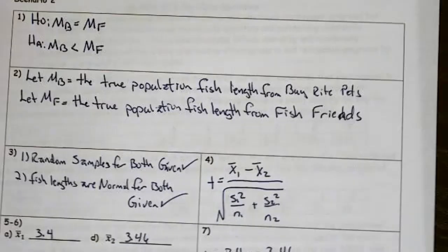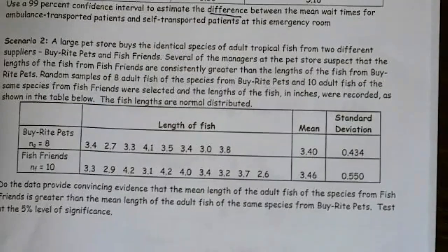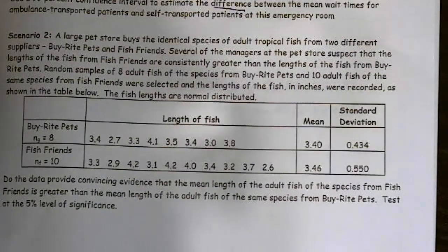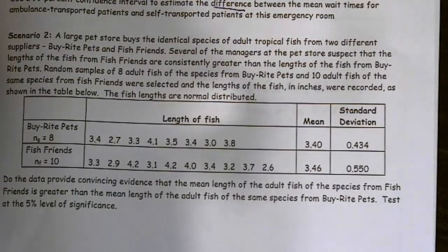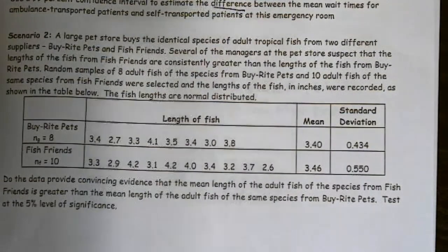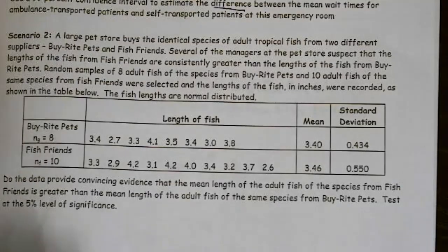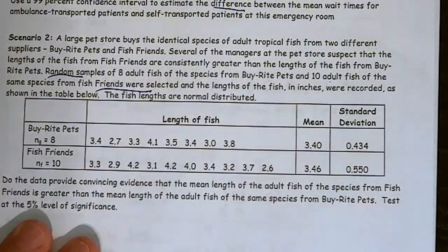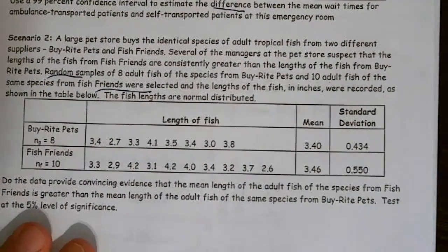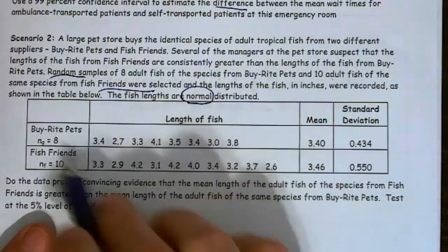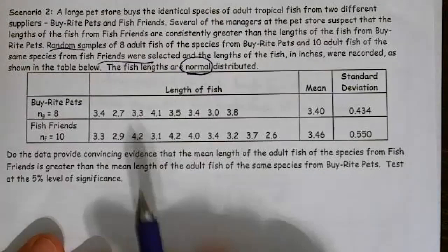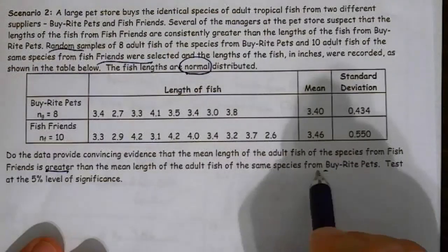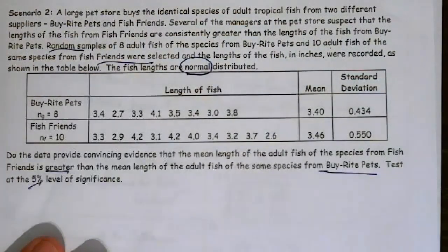So, moving on to the hypothesis test. A large pet store buys the identical tropical fish from two different suppliers, Byrite Pets and Fish Friends. Several of the managers at the pet store suspect that the lengths from Fish Friends are consistently greater than the lengths from Byrite Pets. Random samples of eight adult fish from Byrite Pets and 10 adult fish of the same species from Fish Friends were selected, and the lengths of the fish in inches were recorded as shown in the table. The fish lengths are normally distributed. That's going to be important because our sample sizes are less than 30. Do the data provide convincing evidence that the mean length of adult fish from Fish Friends is greater than the mean length from Byrite Pets? Test at a 5% significance level.